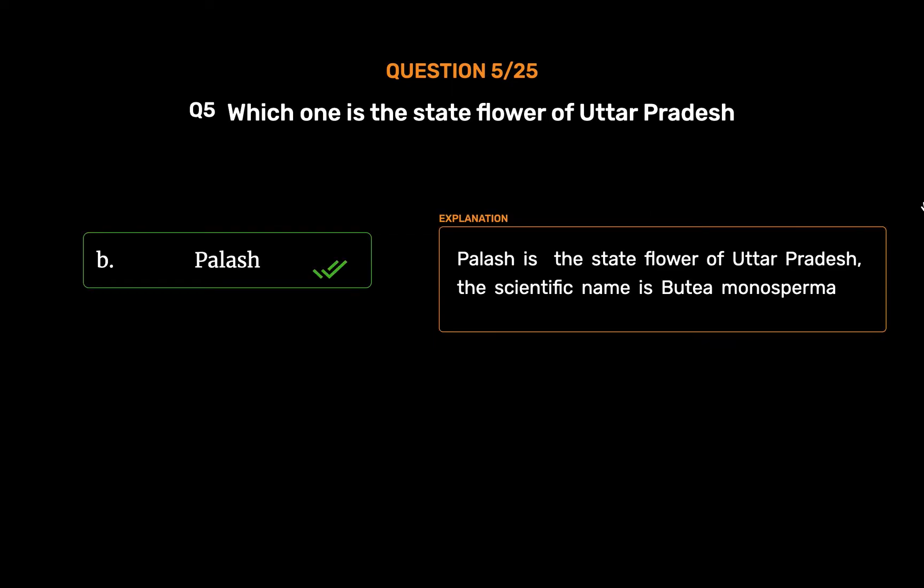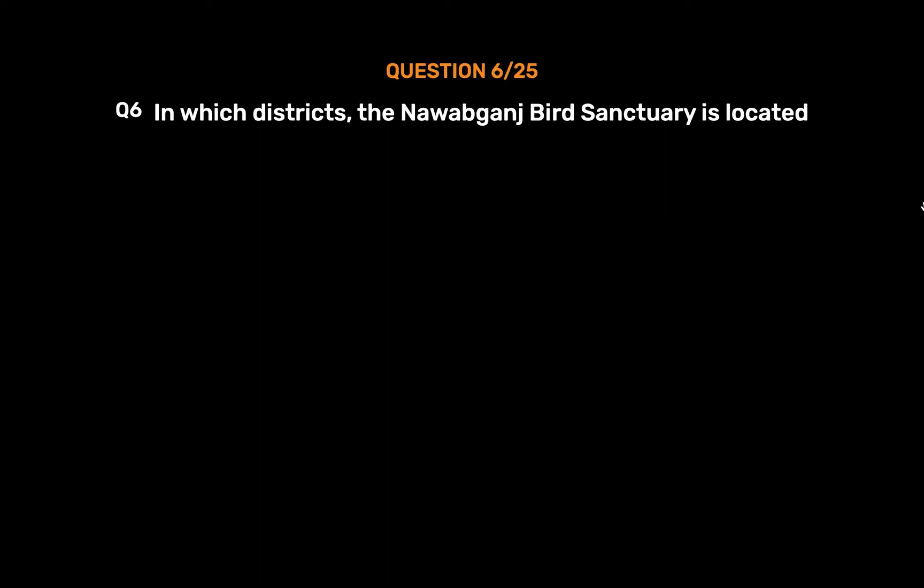Palash is the state flower of Uttar Pradesh. The scientific name is Butea Monosperma.